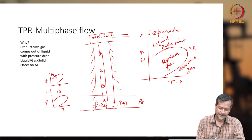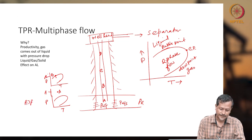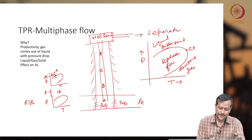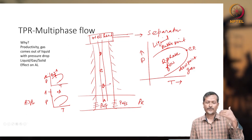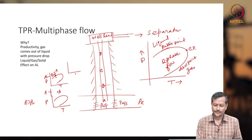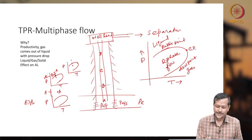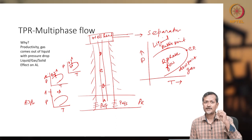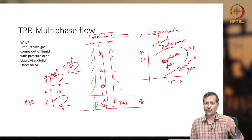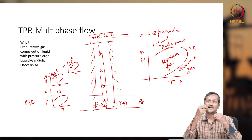Pressure decreases from P1 to P2 as the fluid moves upward. From A to B there is still single phase flow. Moving from B to C, point C is in the two-phase region — a certain amount of gas will evolve from the liquid, creating multiphase flow. Gas is coming out from the liquid, creating bubbles. From A to B there are no bubbles; from B to C you are getting a certain amount of bubbles.